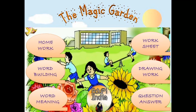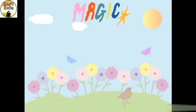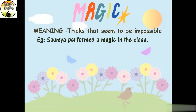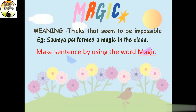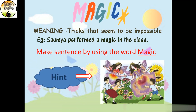Let's see difficult words from this lesson one by one. The first word is 'magic.' Those tricks that seem to be impossible are magic — these tricks appear to be supernatural powers. For example, Soumya performed the magic in the class. Now students, can you make a sentence using this word 'magic'?